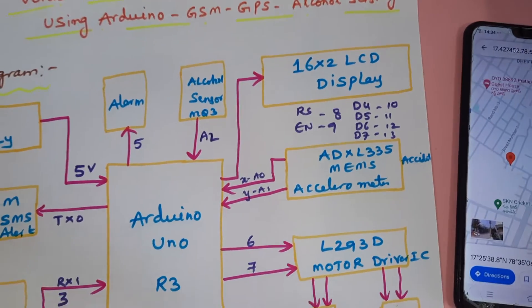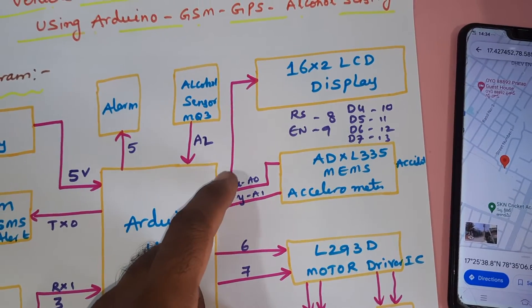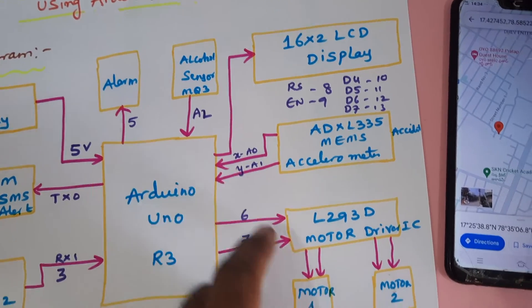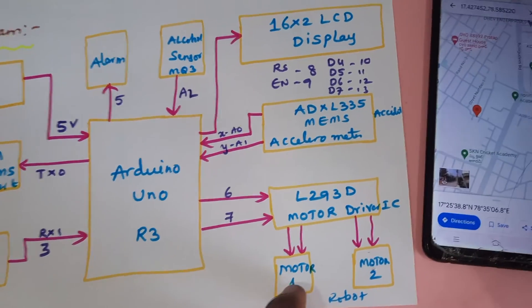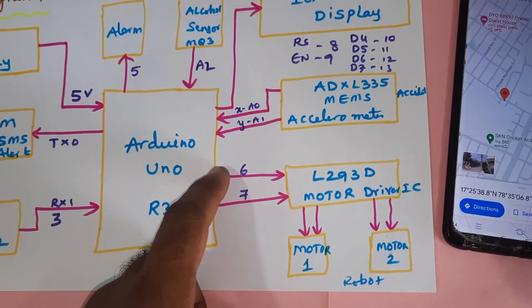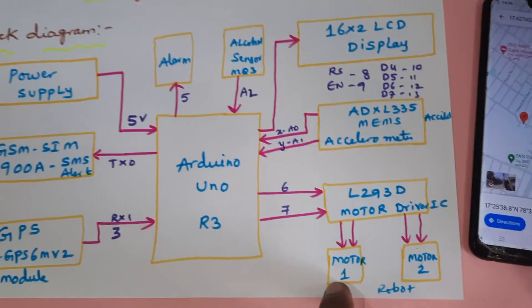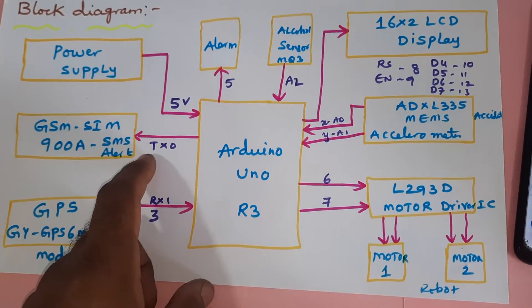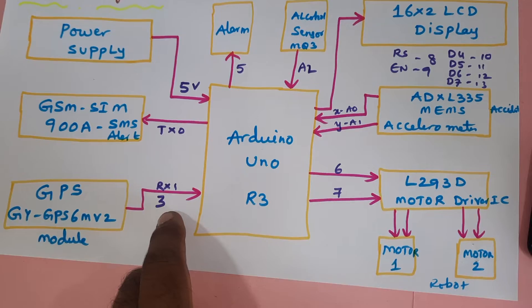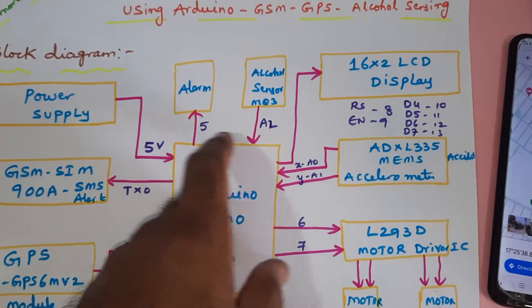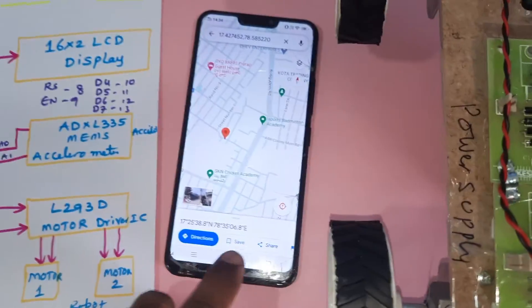The ADXL335 accelerometer sensor reads X and Y coordinates, connected to A0 and A1. The L293D motor driver IC is connected to GPIO pins 6 and 7, driving two 300 RPM motors. The GSM TX is on pin 0, GPS uses external serial communication on pin 3, alarm on pin 5, and alcohol sensor on pin A2.